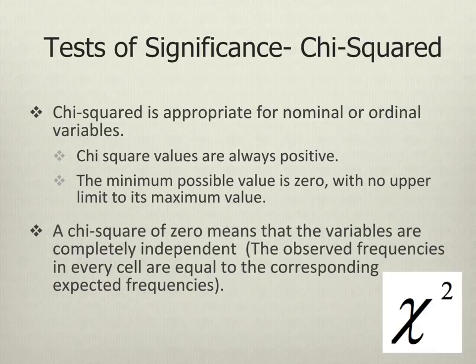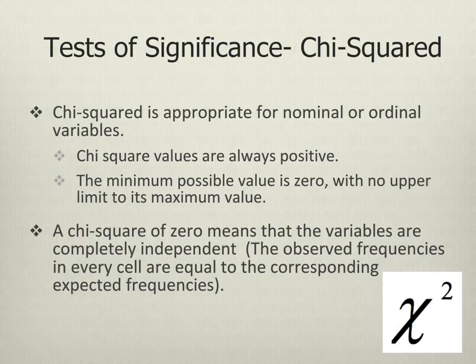For nominal and ordinal variables, chi-squared is an appropriate test of significance. In this class, this is the one we're going to use, but be aware there are other things you could be using. The value of chi-squared is always positive. It will range from 0 to no maximum value — it has unlimited potential values. A chi-squared value of 0 means that the variables are completely independent, not related at all. The larger the value of chi-squared, the more likely it is you're going to discover your variables are related. Remember, we're not going to look at the actual value of chi-squared to get our result — we're going to look at the p-value, or the significance. If that's less than 0.05, we can reject the null.